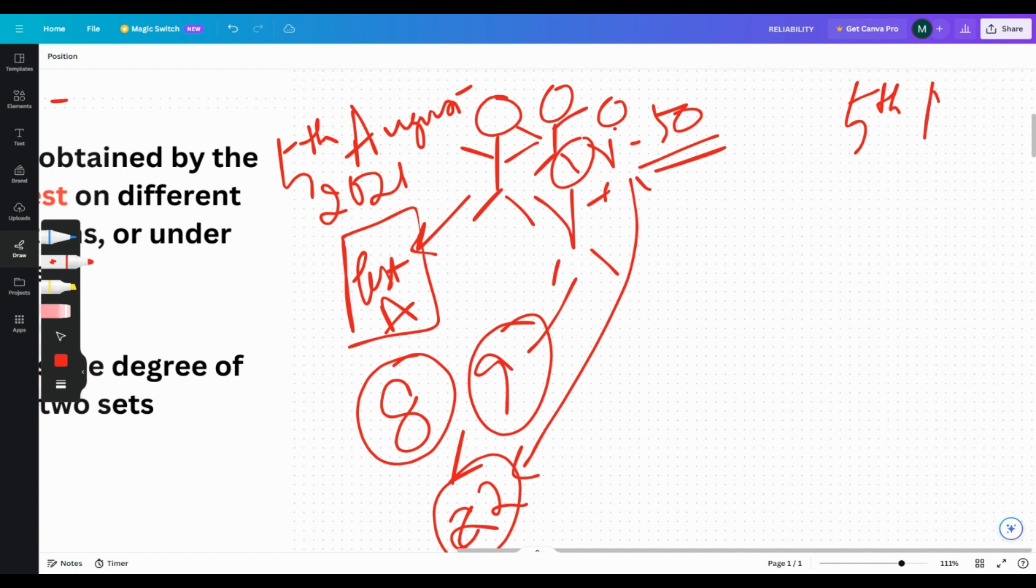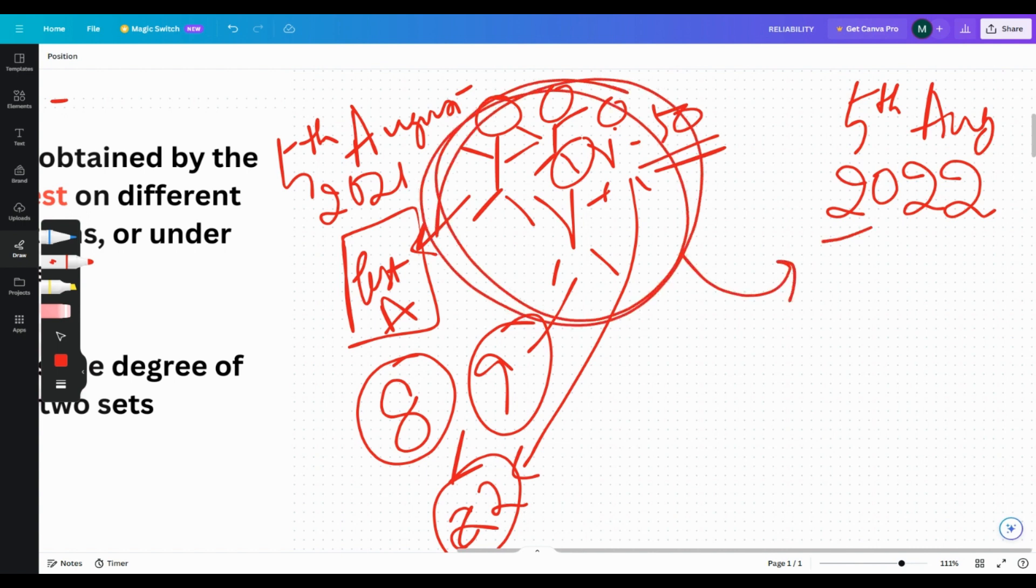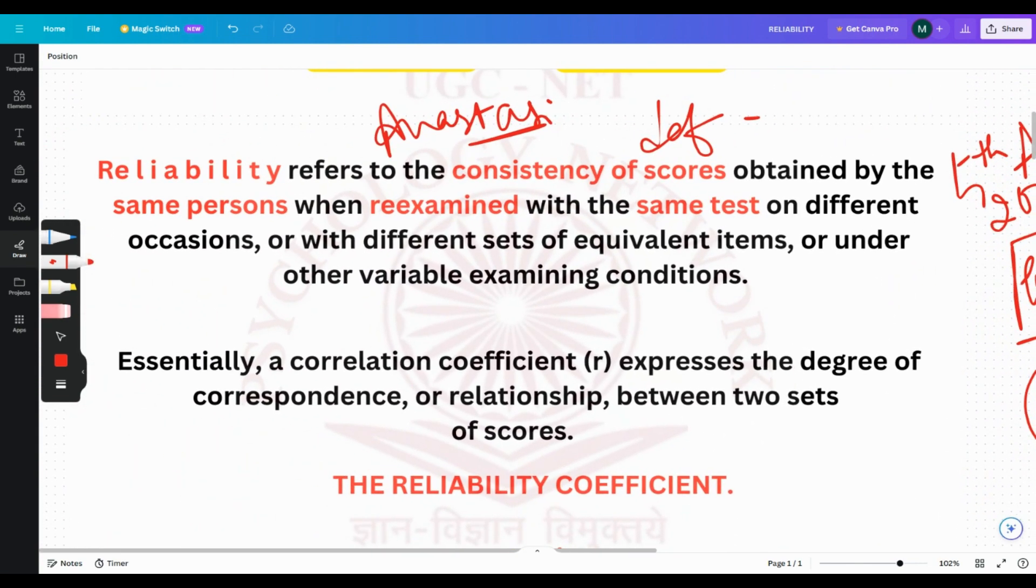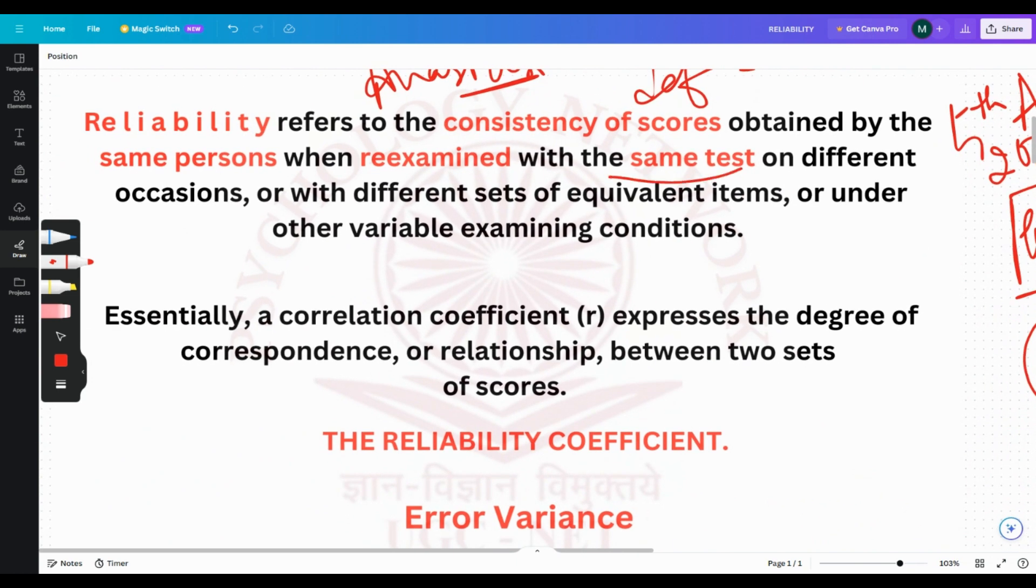On 5th August 2022, the same group of people take the same test again, test A. If this person got 8 here and is getting 8 here also one year later, this person got 9 and is getting 9 here also, this means test A is reliable. Even after a year, the scores haven't changed. This is what's written in the definition: the same test re-examined and consistency of the scores.